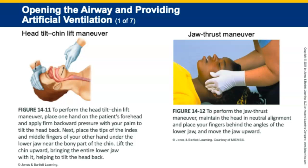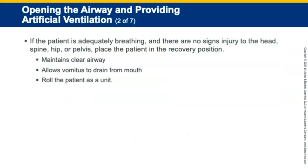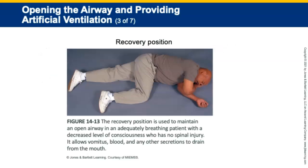Open the airway in adults with a head tilt chin lift, removing any foreign materials found in the mouth. Use this technique for non-traumatic patients. Use the jaw thrust maneuver if any trauma is suspected. If the patient is breathing adequately on their own with no signs of injury to the head, spine, hip, or pelvis, place them in the recovery position to maintain an open airway in a patient with decreased level of consciousness who has no spinal injury.